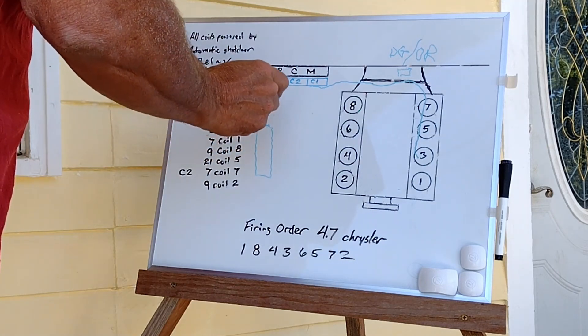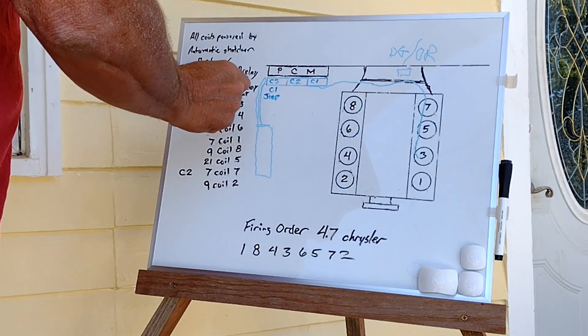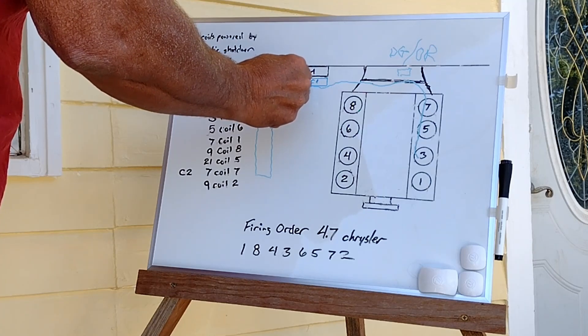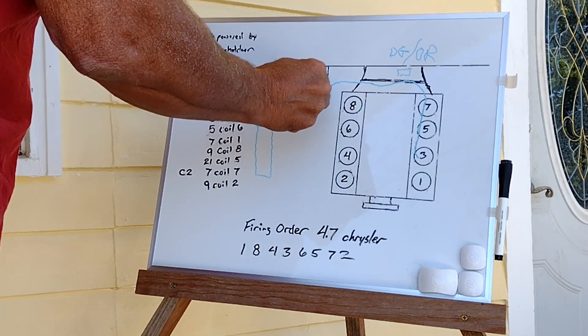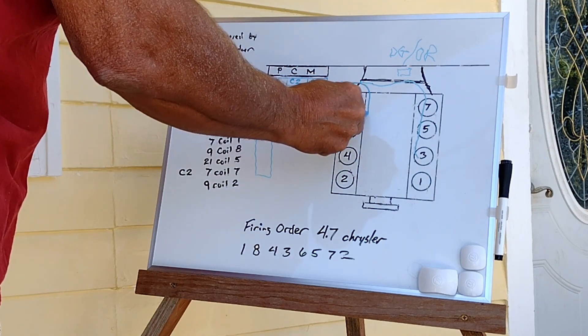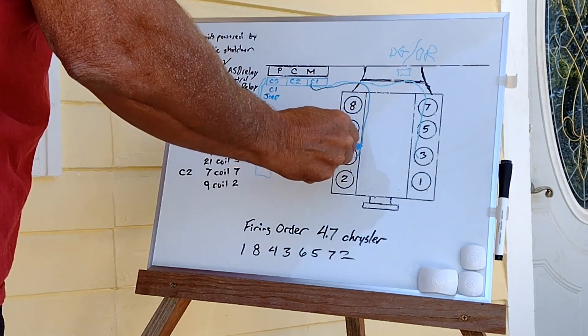You're going to go to the number three pin on C1, and you're going to take that to the number four coil. You're going to route it across and bring it down to coil number four.